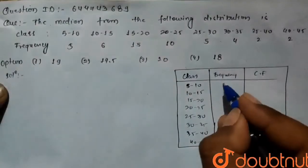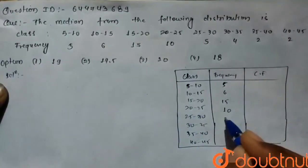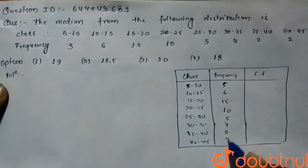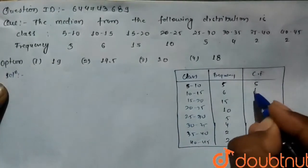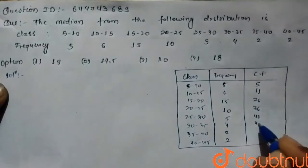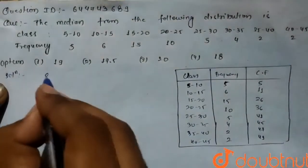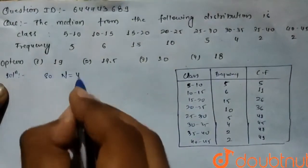Here, this frequency is 5, 6, 15, 10, 5, 4, 2, 2 and the cumulative frequency is 5, 11, 26, 36, 41, 45, 47, 49. So the value of n is 49.